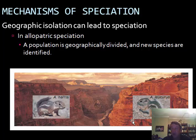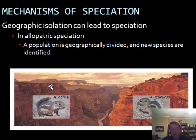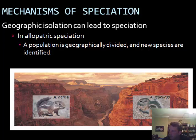They've been separated long enough to be considered a new species. The idea is that at one time, before the canyon formed, these were the same species — or perhaps they were on one side and a few traveled to the other and developed into a new species over there. This type of speciation, driven by a geographical divide, is called allopatric speciation.